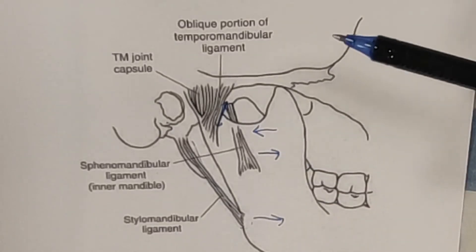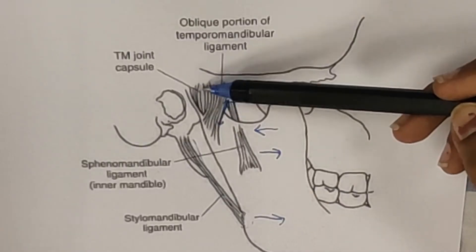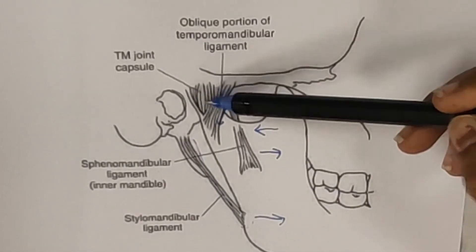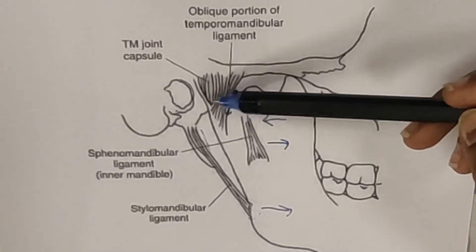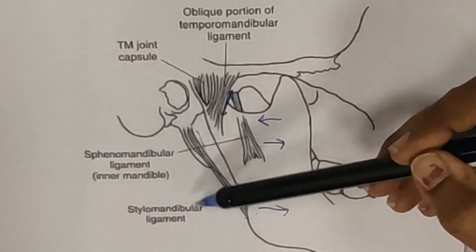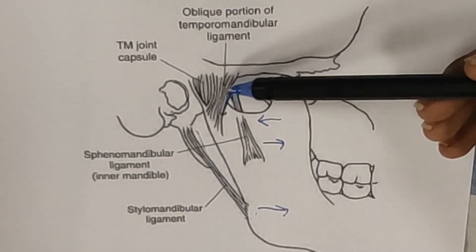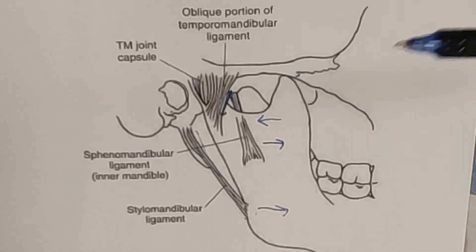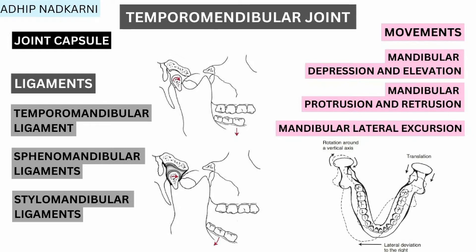To summarize, the temporomandibular joint has four main soft tissue structures: the TMJ capsule, and three ligaments. The temporomandibular ligament checks posterior movement, while the sphenomandibular and stylomandibular ligaments check anterior and inferior movement. Only the temporomandibular ligament checks posterior movement of the mandible.